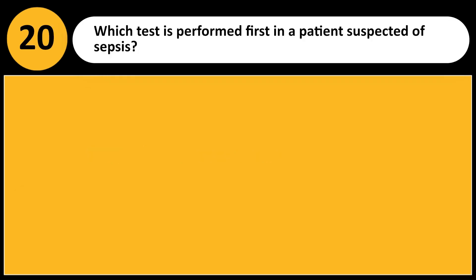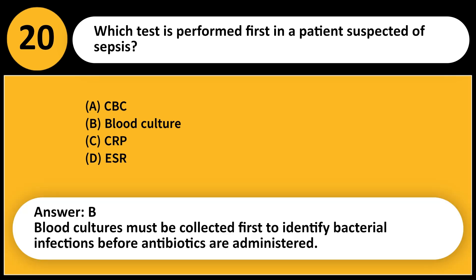Which test is performed first in a patient suspected of sepsis? A. CBC. B. Blood culture. C. CRP. D. ESR. Answer: B. Blood cultures must be collected first to identify bacterial infections before antibiotics are administered.